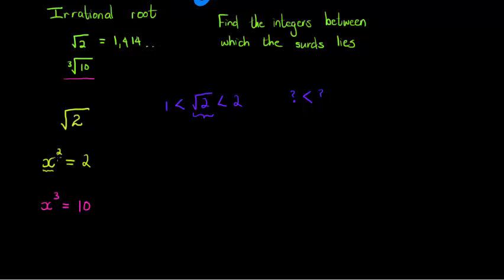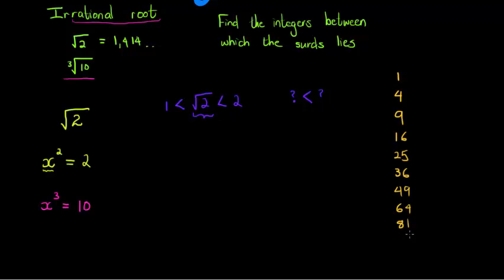What is going to be important here is that we know the common ones — in other words, the numbers whose roots are rational. We find these by simply taking the squares of numbers 1 to about 15. So: 1×1=1, 2×2=4, 3×3=9, 4×4=16, then 25, 36, 49, 64, 81, 10×10=100, 11×11=121, 12×12=144, 13×13=169, 14²=196, and 15²=225.